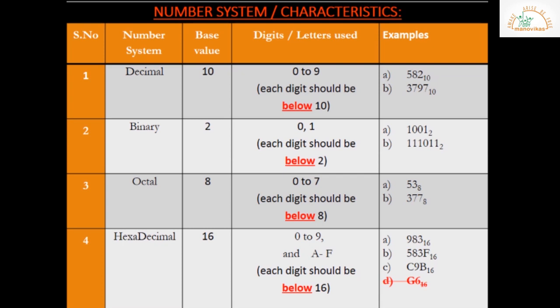Next example: 377 base 8. Each digit here is below 8, so this is also an octal number.